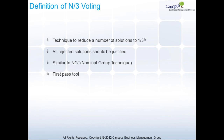N by 3 voting is a technique to reduce a number of solutions to one-third. During the course of action, every rejected solution should be properly justified. It is similar to nominal group technique, or NGT, which uses prioritization.